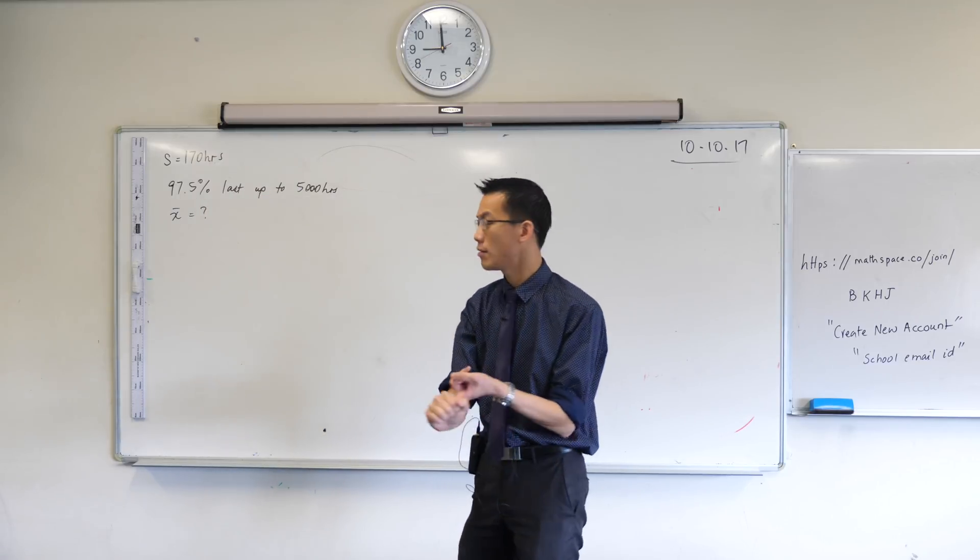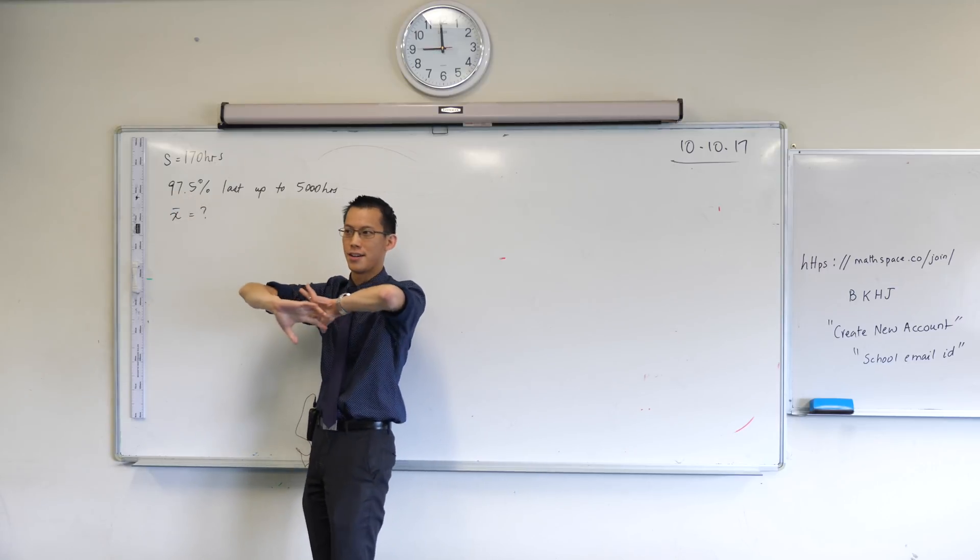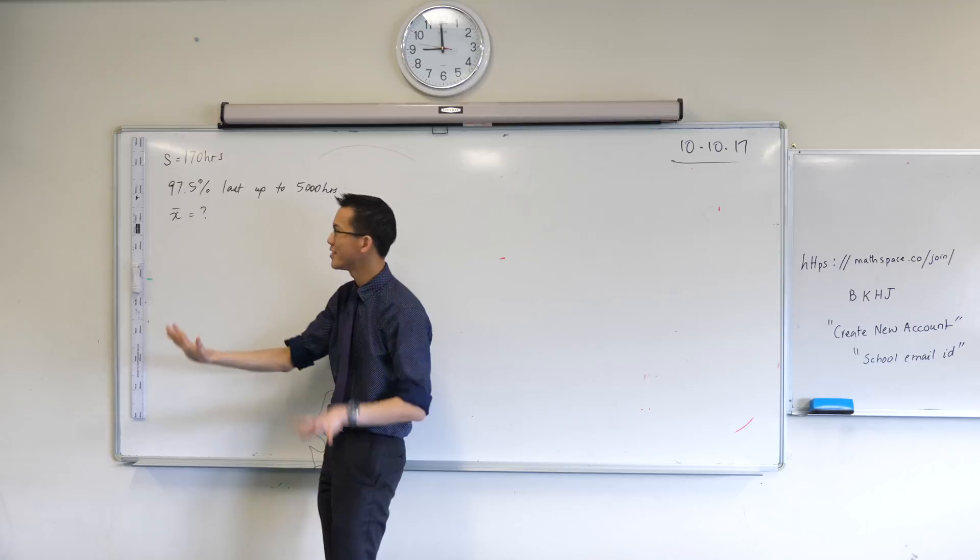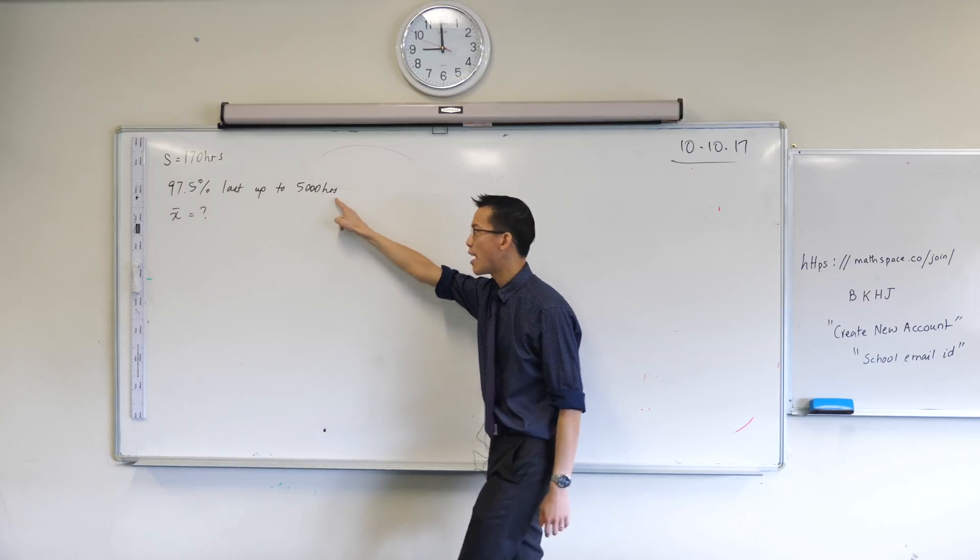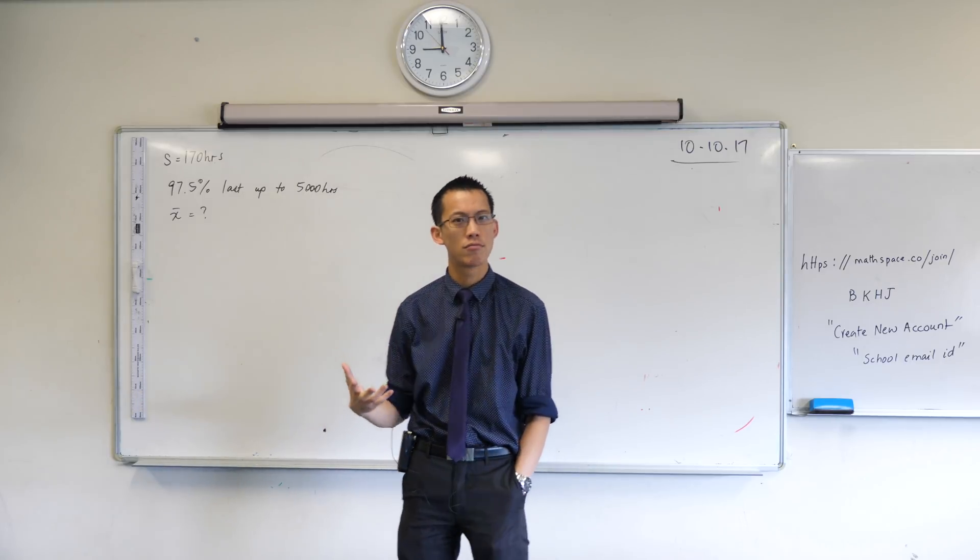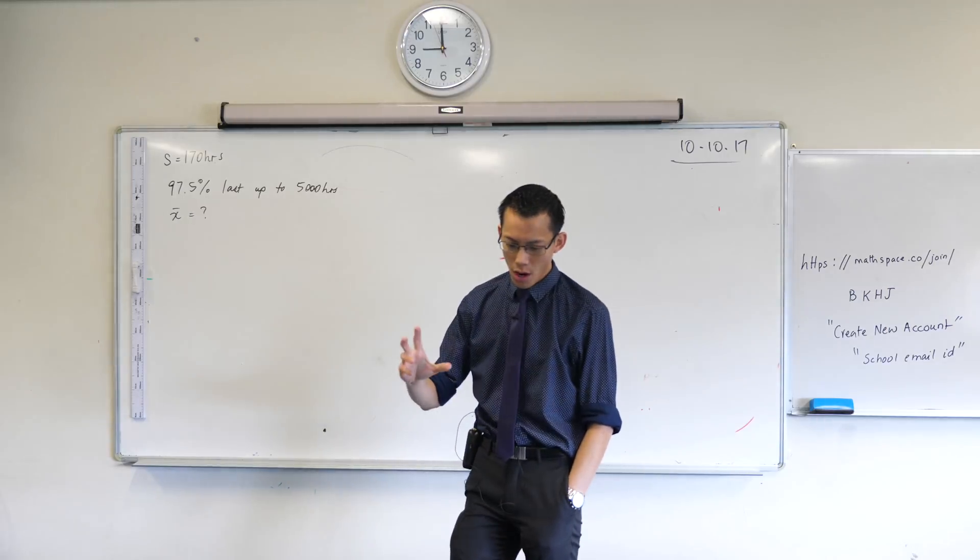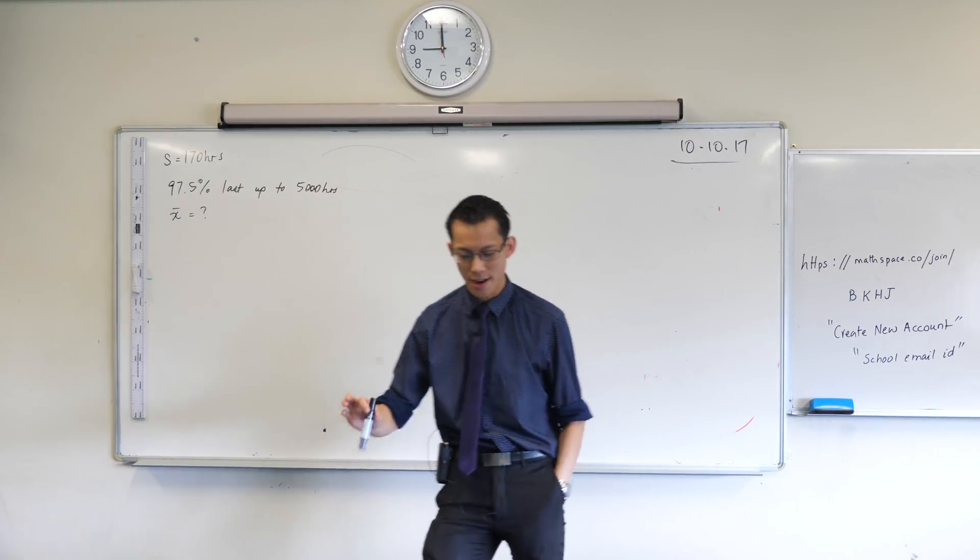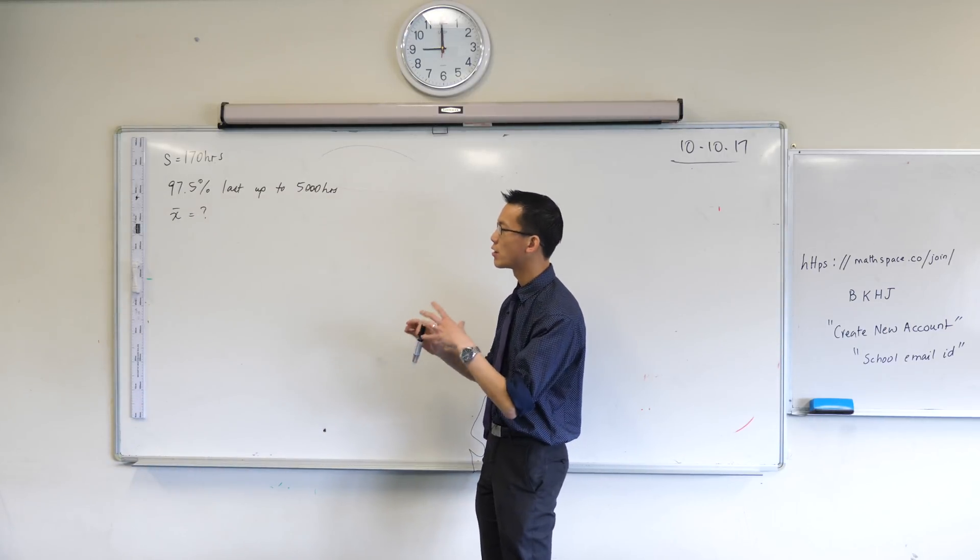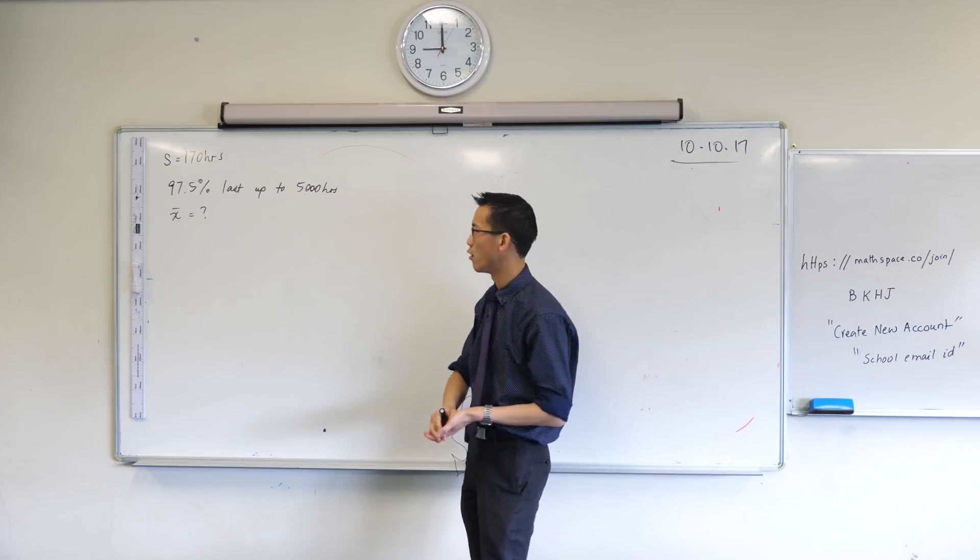We get given standard deviation. We also get given that a certain proportion of the entire light globe population lasts this long, and what they want us to work out is the average lifespan of these light globes. What's X bar in this context? We need a lot of pieces of information, and the formula and data sheet is going to help us here.